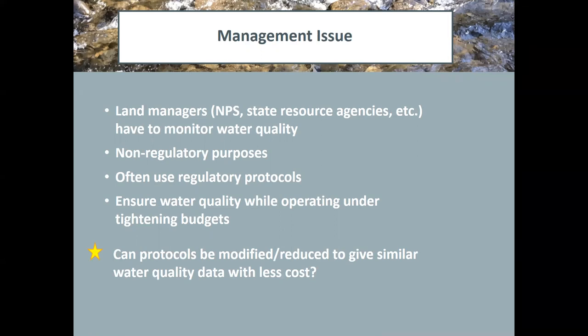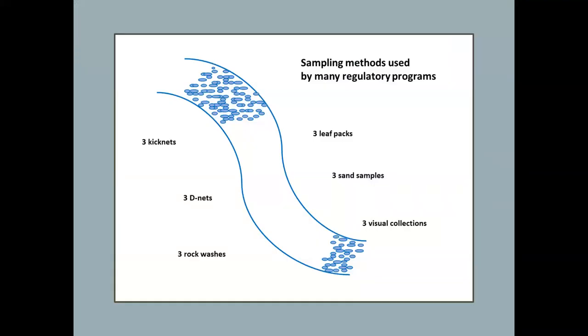So can protocols be modified or reduced to give similar water quality data for them to be able to really keep an eye on their resource but with less cost for these programs? This picture shows an example of a regulatory water quality method. So this reflects what was done at Great Smoky Mountains National Park. And this is where I did the study that I'm talking about today, which is part of a larger project. But Great Smoky Mountains National Park has a protocol that mirrors North Carolina's. And then I mirrored what the Smokies was doing so everything was consistent.